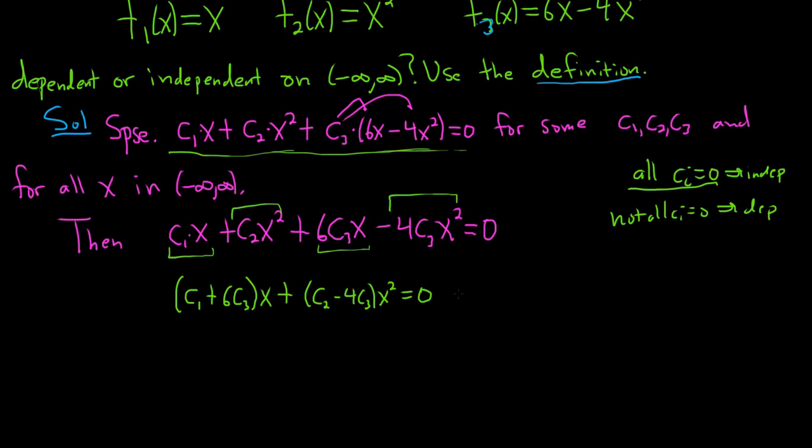well, we have an equation equal to 0. This is really equal to 0x plus 0x squared. There's really a 0 there. So basically you're just using matching. So you set each piece equal to 0. So we have c1 plus 6c3 equal to 0, and then c2 minus 4c3 equal to 0.